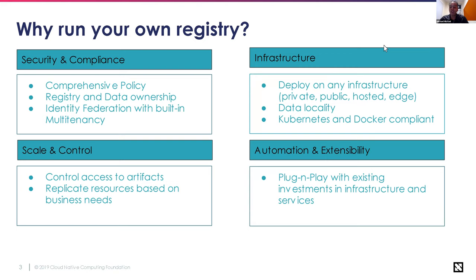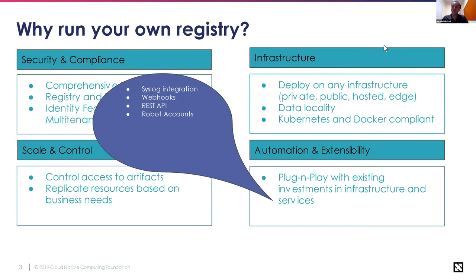On automation and extensibility, enterprises have made investments in existing products and services, so the registry should be plug-and-play. Key capabilities include integration with logging systems like ELK stack or Splunk, webhooks so CI/CD pipelines are well integrated — images are built, pushed to the registry, scanned for vulnerabilities, and notifications are sent when ready for production or Kubernetes. A REST API allows everything to communicate in a unified manner, and robot accounts enable specialized automation accounts.